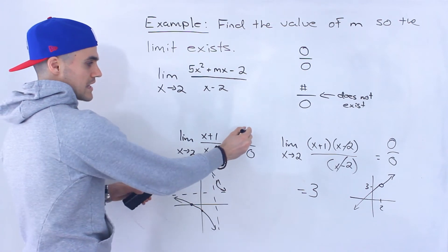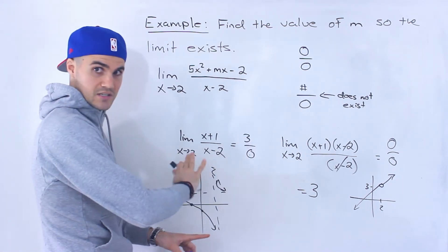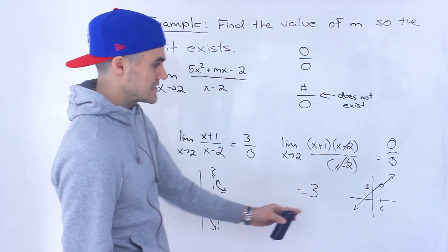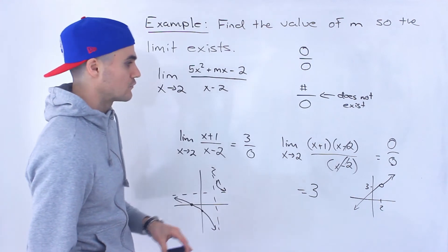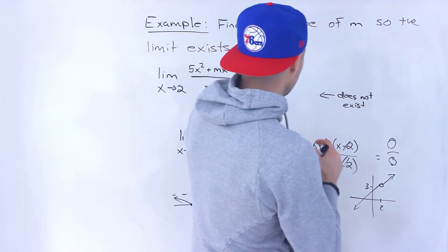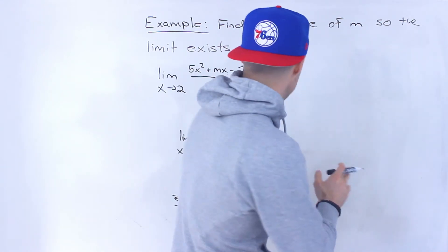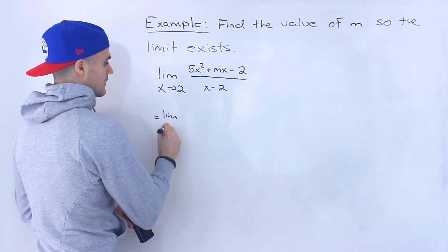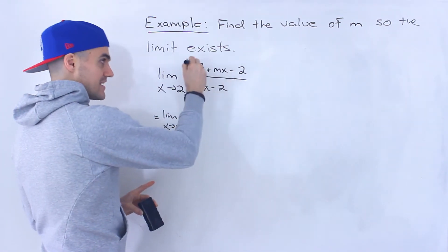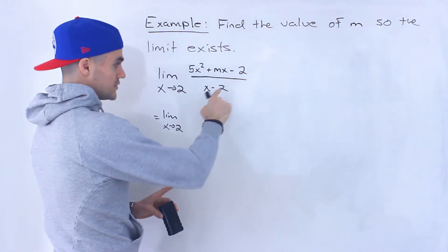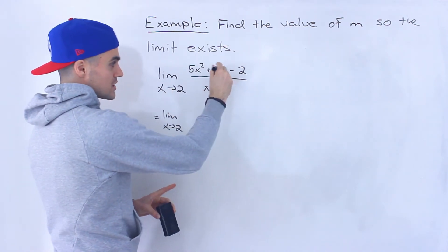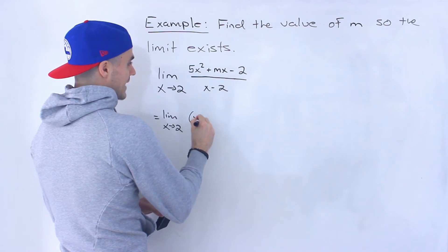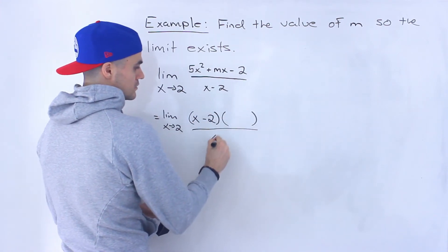Notice the difference: with a number over 0 the limit does not exist. With 0 over 0, the factors can cancel out, giving a hole at x = 2 instead of a vertical asymptote. Going back to our example, knowing this, in order for the limit to exist the numerator must also approach 0. If it approaches a number, x = 2 will be a vertical asymptote. So we know the numerator, when factored, must have (x − 2) as a factor.